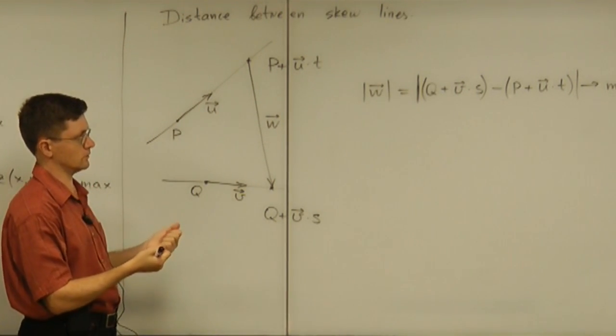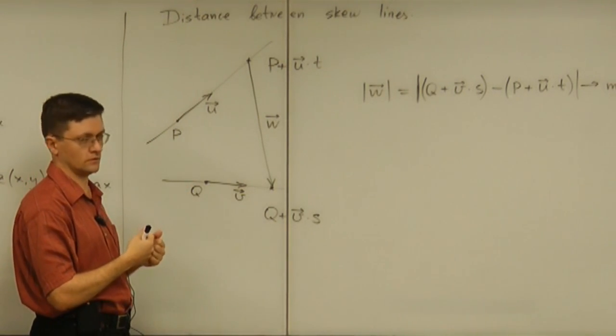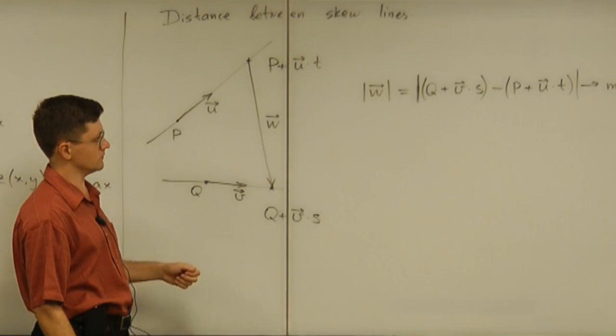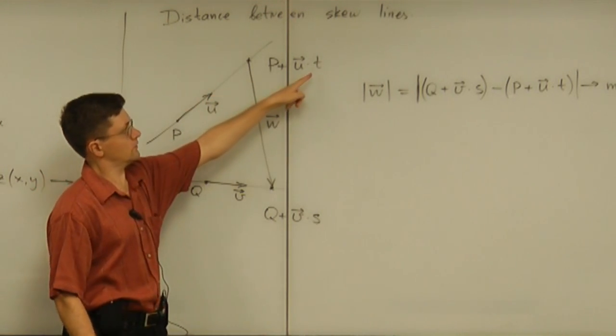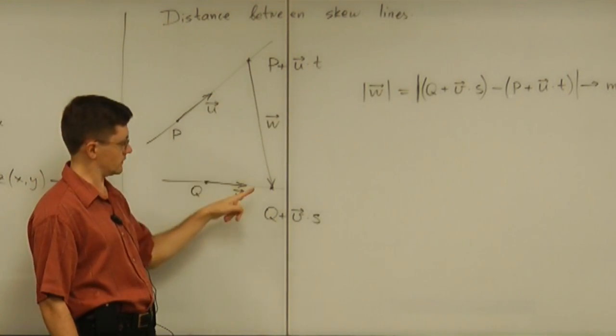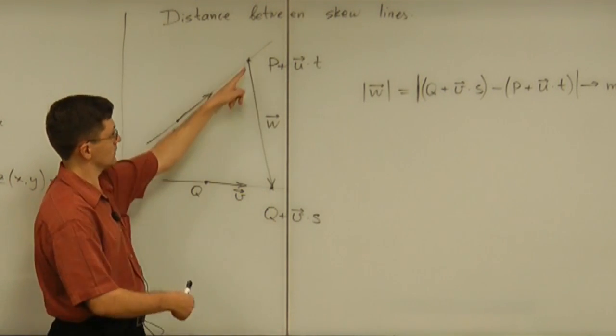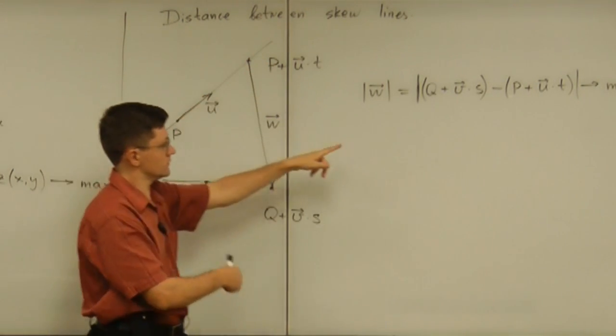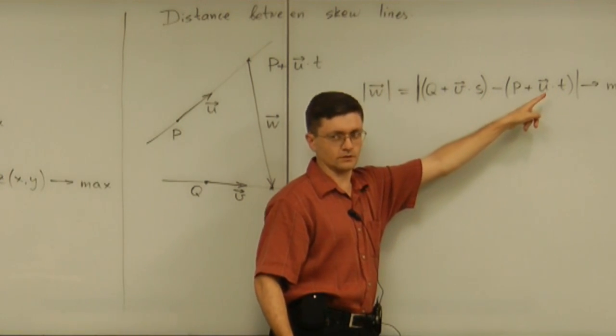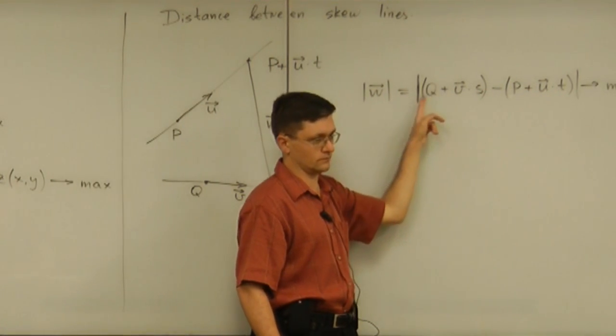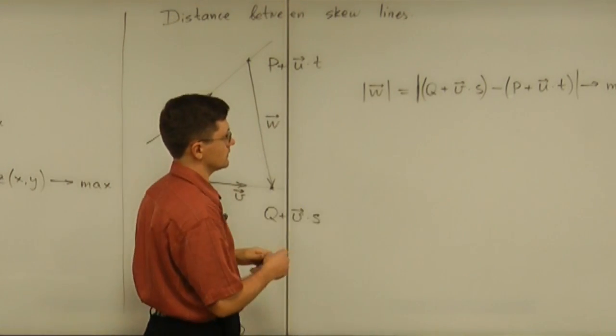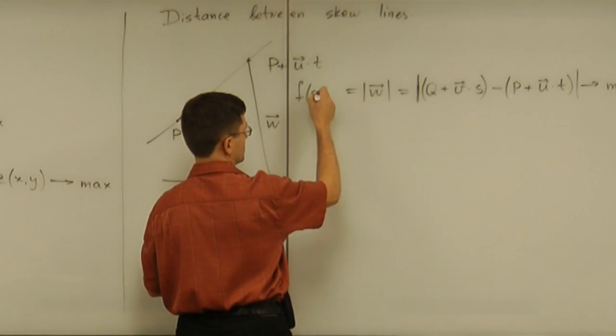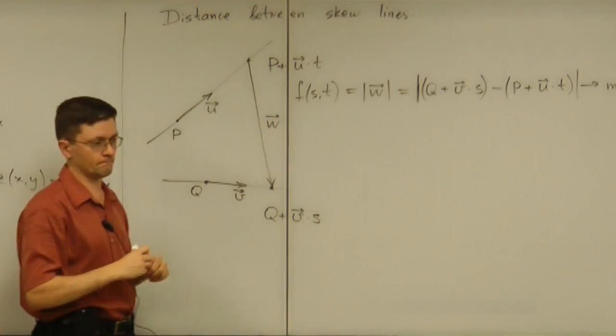Well, to minimize using what? What are the tools that you can apply there? What are the means for the minimization? Well, you apply, you change that unknown t and that unknown s. That amounts to allowing this point to move along the first line, that point to move along the second. So, you treat s and t as variables, unknowns. And the rest are given vectors or points. So, this expression becomes a function of two variables that you want to minimize.